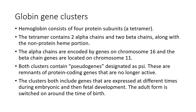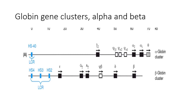Importantly with the globins, they include genes that are expressed at different times during embryonic and fetal development. Here's a representation of the alpha and beta globin clusters. The alpha cluster has one embryonic form expressed very early in development, three pseudogenes, and then two mature adult alpha genes — alpha 2 and alpha 1 — all encoded together on chromosome 16.